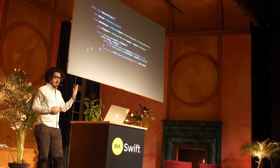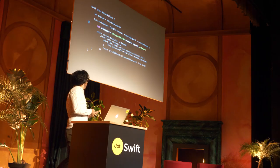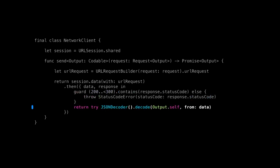This code has four parts. The first part is taking a request and turning it into a URL request so the system can use it. The second part is sending that request. Then it checks the status code of the result that it got. And lastly, it takes that data that was returned and decodes the JSON.